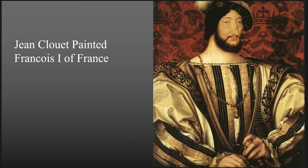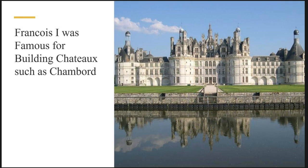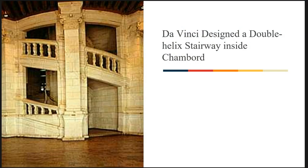Jean Clouet painted Francis I of France. Some of these paintings of kings will be when we transition into Baroque — Baroque was more of a painting style whose whole purpose was to show how rich and powerful someone was. Francois I was famous for building chateaux such as Chambord. We see domes once again, and also arches, which carried over from Roman and Greek architecture. Da Vinci also designed a double helix stairway inside of that particular building.